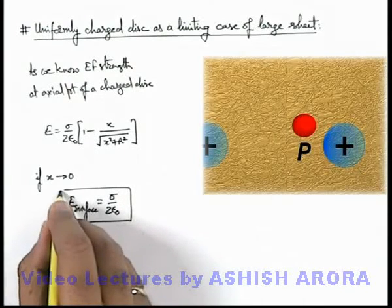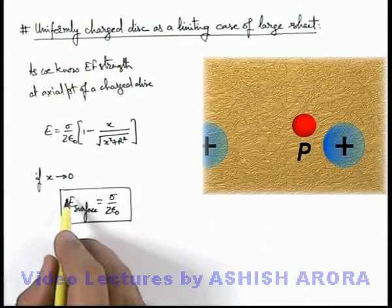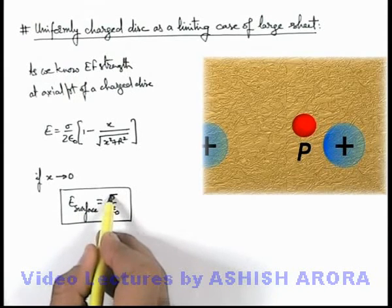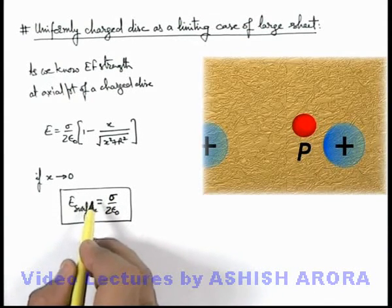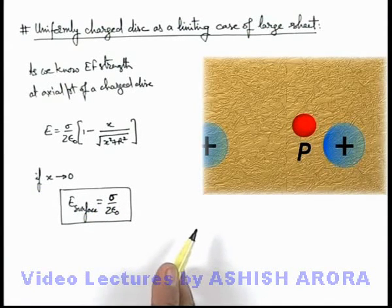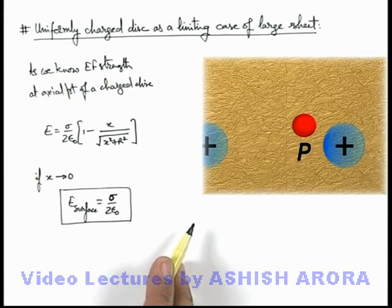This is the electric field in front of a very large infinite sheet charged with surface density sigma. Here you can see that in this picture, point P appears to be just in front of a very large or infinite sheet having surface density sigma, because the distance of point P is negligible compared to the size of the disc.